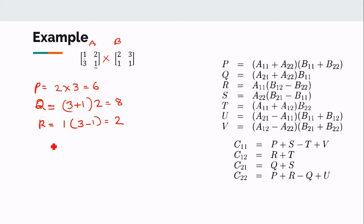And then S is computed as S is equal to A22 which is 1 here, into B21 which is 1 here, minus B11 which is 2. So 1 minus 2 is minus 1 into 1, it will be minus 1.